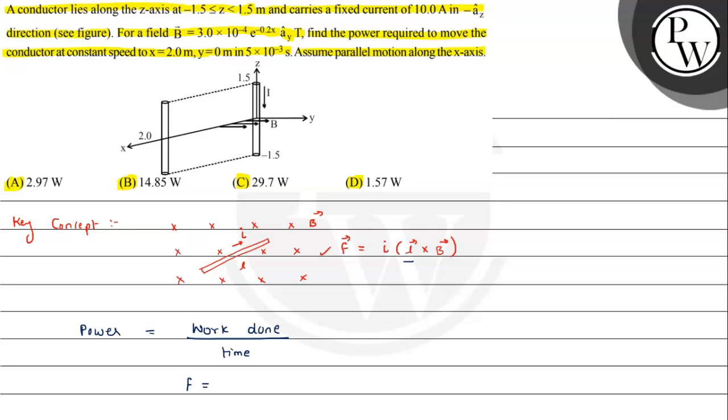The force can be written as F = ILB sin theta. Sin theta will be 1 because the angle is 90 degrees. So force can be written as I times B(x) times L. Since it is of variable nature, for small value of displacement we can consider the magnetic field to be constant. So we will go for using the integration. So power can be written as 1 upon t integration of work done, and the work done is force into the displacement, small displacement we will be considering in this case.